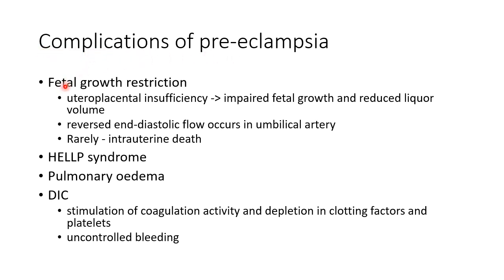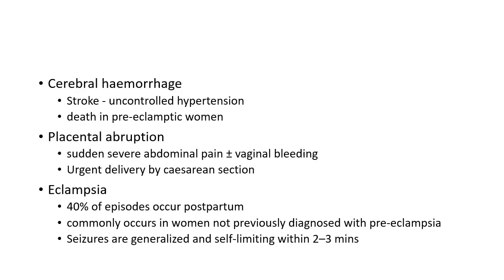Complications of preeclampsia include fetal growth restriction due to uteroplacental insufficiency, causing impaired fetal growth and reduced liquor volume. Reversed end-diastolic flow occurs in the umbilical artery, and rarely intrauterine death. Other complications include HELLP syndrome, pulmonary edema, disseminated intravascular coagulation (DIC) — due to stimulation of coagulation and depletion of clotting factors and platelets — leading to uncontrolled bleeding. Cerebral hemorrhage and stroke can occur in uncontrolled hypertension and are a major cause of death. Placental abruption presents with sudden severe abdominal pain with or without vaginal bleeding and requires urgent delivery by cesarean section.